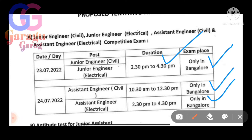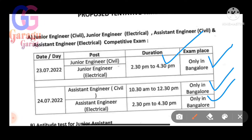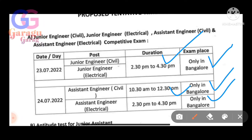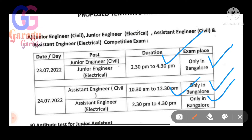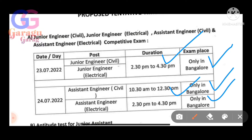The exam timing slots are: 10:30 to 12:30, and 2:00 to 4:30. For Junior Engineer — civil and electrical — the exam is scheduled on the 24th.